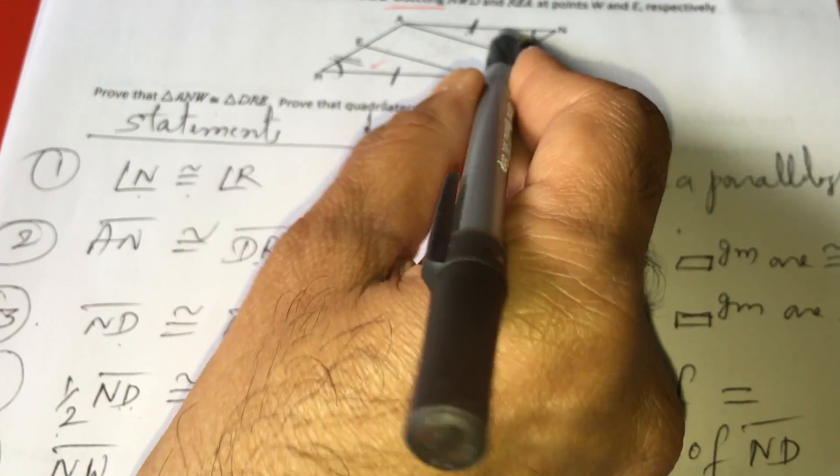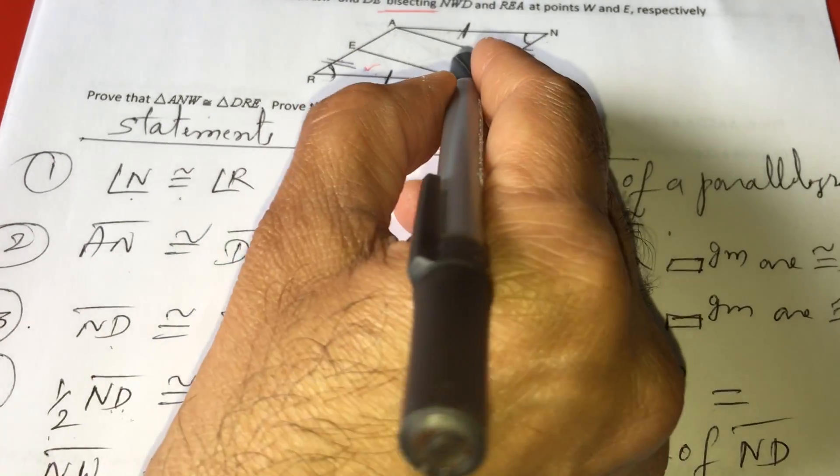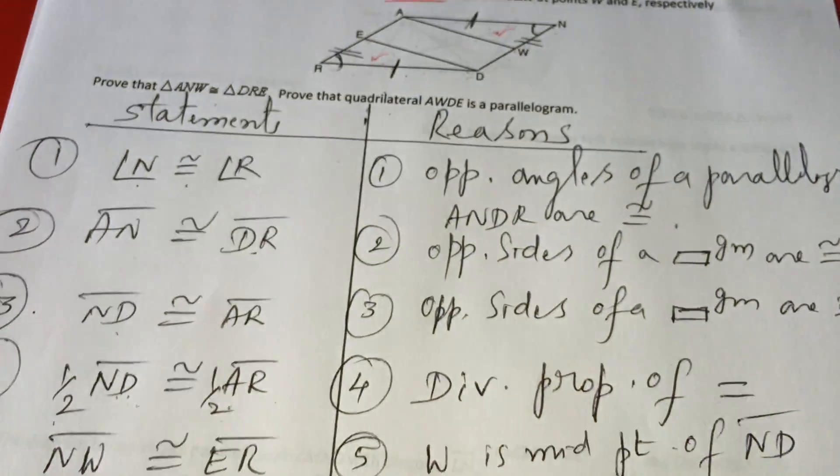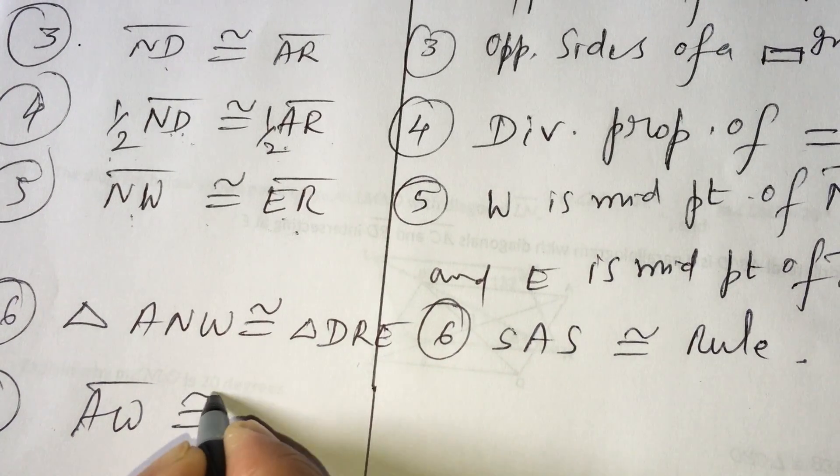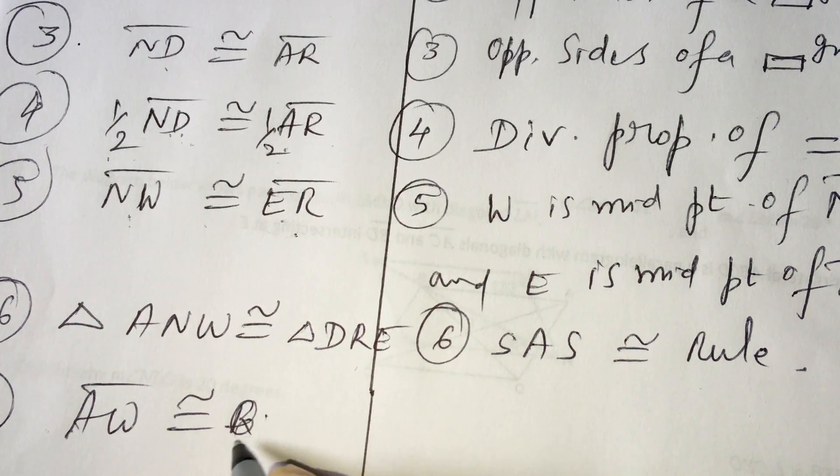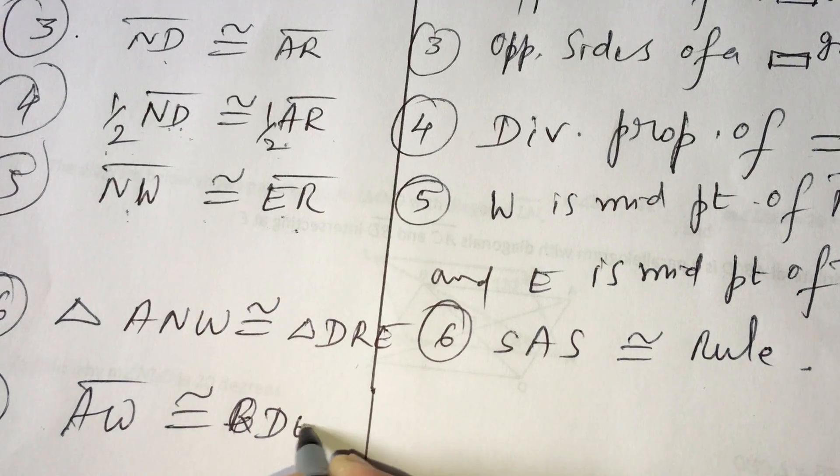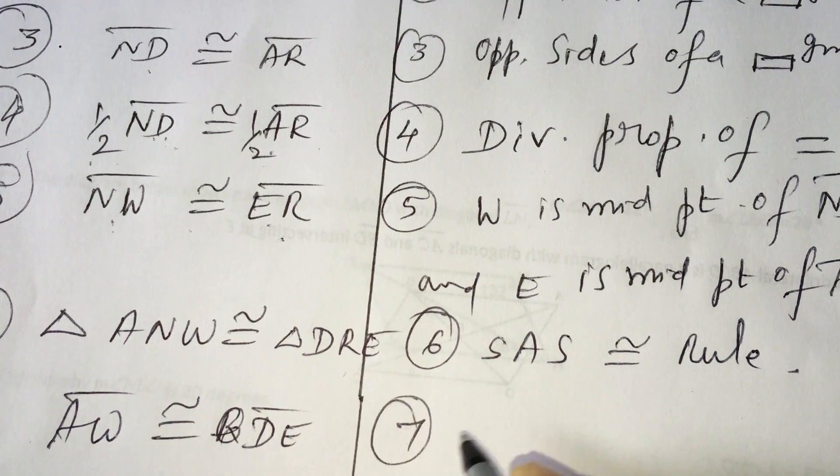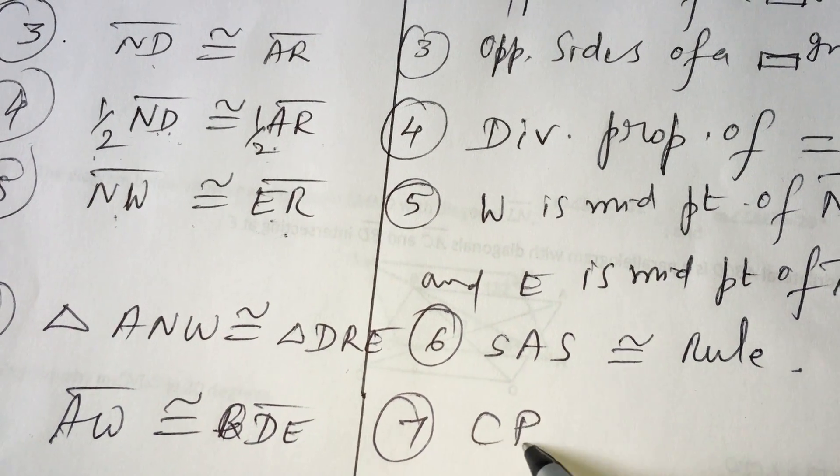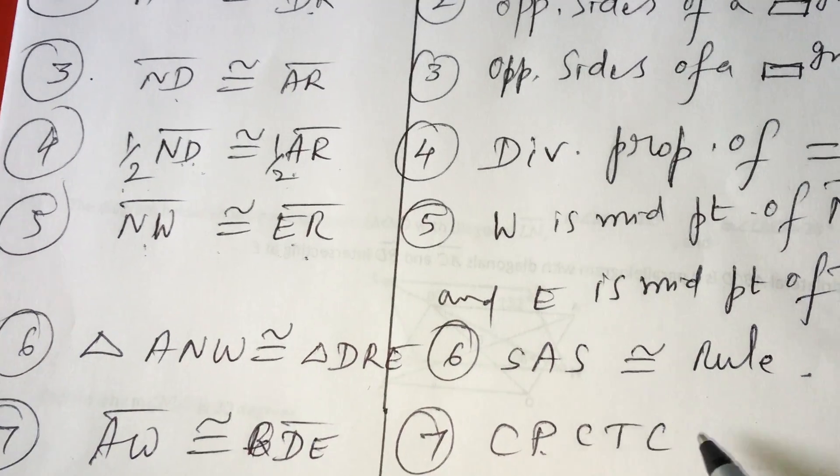When once these two triangles are congruent, automatically AW and DRE are equal. Why they are equal, why they are congruent? The reason is AW and DRE are congruent because they are corresponding parts of congruent triangles.